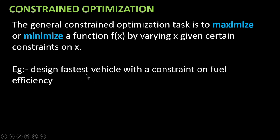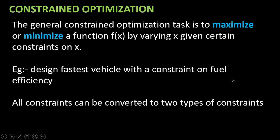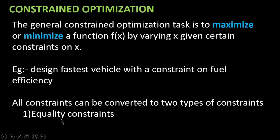We have to find out — we have to maximize the speed of the vehicle, design a vehicle with maximum speed, with a constraint on fuel efficiency. All constraints can be converted to, or we can consider all constraints in one of two categories: equality constraints and inequality constraints.